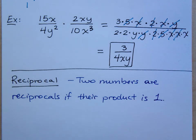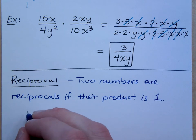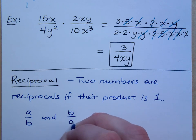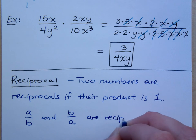Two numbers are called reciprocals if their product is 1. What does the word product mean again? Product means multiplication. So we're talking about two numbers that when you multiply them, you get 1.